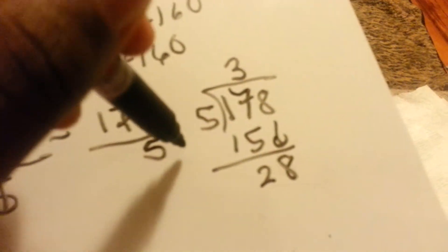5 goes into 1, 0 times. 5 goes into 17, 3 times. 5 times 3 is 15. 17 minus 15, you got 2. Bring down the 8. 5 goes into 28, 5 times. 5 times 5 is 25. You got a remainder of 3. Bring it down. 5 goes into 30 six times. 5 times 6 is 30.